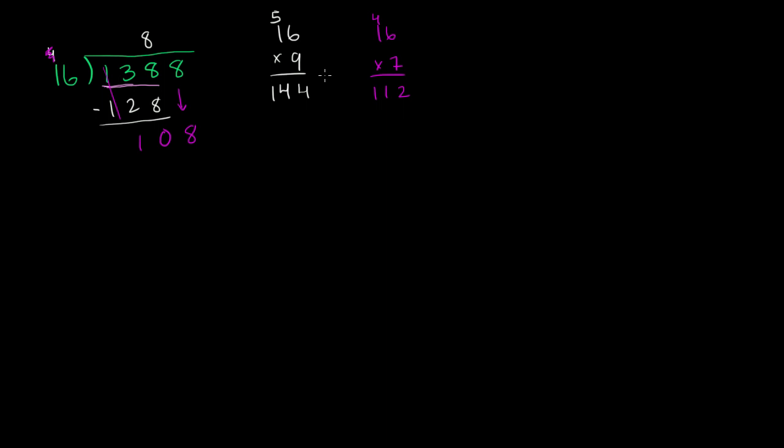That's still too large, so it's going to be 6. Notice we had to do this little side work on the side to realize it wasn't 7. Now 6 is going to be the largest. It's just how many times you go into 108 without going over it. So 6 times 6 is 36. Carry the 3, or regroup the 3. 6 times 1 is 6 plus 3 is 9.